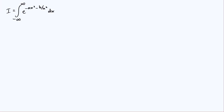Hi everyone. In this video we're going to evaluate a pretty interesting, pretty strange looking Gaussian-like integral, which is the integral from minus infinity up to infinity of e to the minus ax squared minus b over x squared with respect to x, where a and b are going to be positive real parameters.